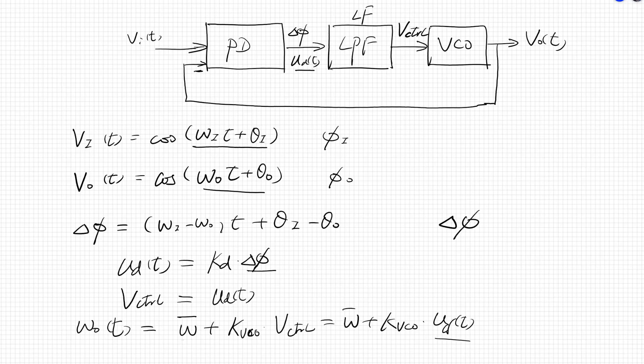So delta phi becomes zero at this time. Now the frequency of the input and output may not be the same. Over time, the phase of the input signal starts to lead the phase of the output signal. A phase error will build up and increase with time. So the phase detector develops a signal U D which also increases with time. This causes the VCO to increase its frequency omega out, and then the phase difference starts to reduce.